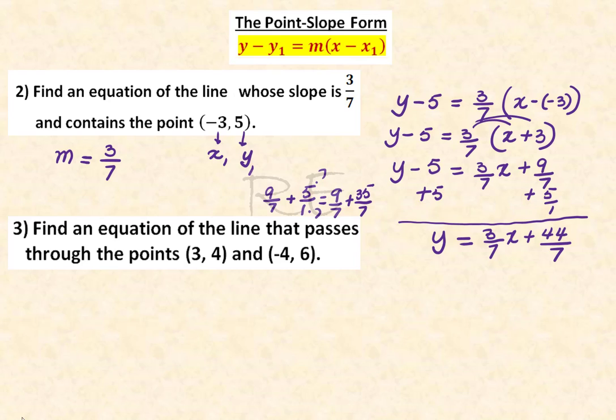Find an equation of a line that passes through the points (3, 4) and (-4, 6). First, we need to find the slope. The slope will be equal to the difference of the y coordinates, 6 minus 4, divided by the difference of the x coordinates, negative 4 minus 3. 6 minus 4 is 2, negative 4 minus 3 is negative 7. So the slope is negative 2 over 7.